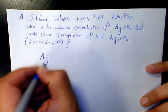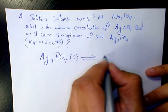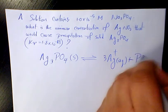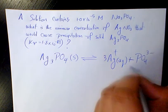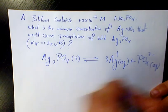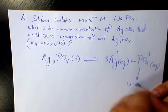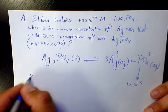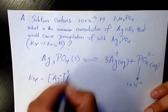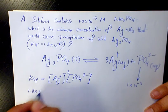So if I write silver phosphate in solid form, when it dissolves it's going to be 3 Ag⁺ in aqueous form plus PO₄³⁻ in aqueous phase. The Ksp will be equal to [Ag⁺]³ times [PO₄³⁻], and Ksp is 1.8×10⁻¹⁸.